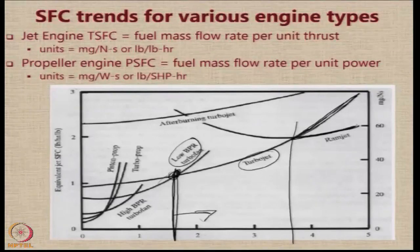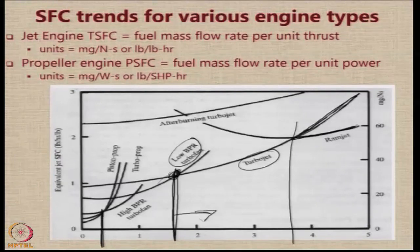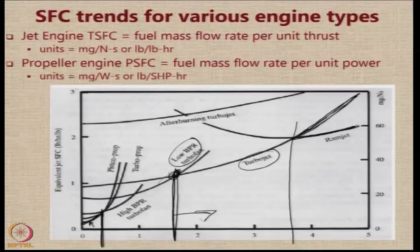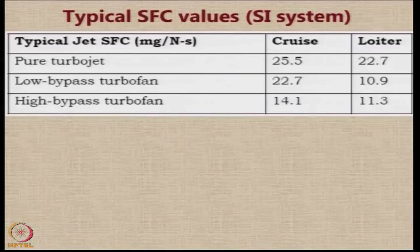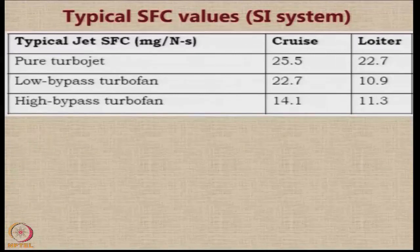Depending on which Mach number range you are targeting — for low-speed aircraft, up to Mach number around 0.4, piston prop and turboprop are suitable. After Mach 0.4, turboprops become better, while below that piston props have a much lower SFC. The lowest SFC is for piston props. This chart helps you decide what power plant to use. Typical values of SFC in the SI system are given in milligrams per Newton second, and this particular unit is used because the numbers which come out are easy to work with.